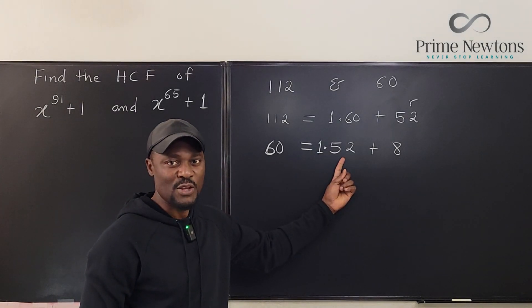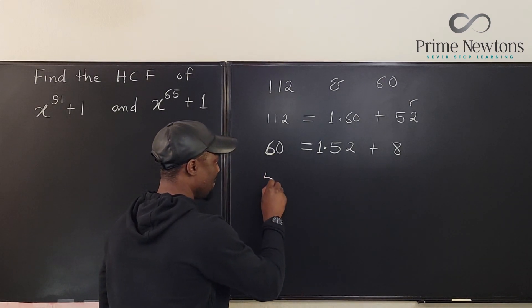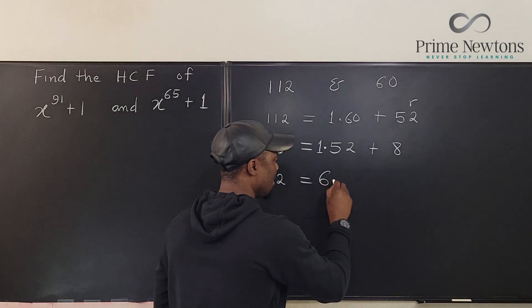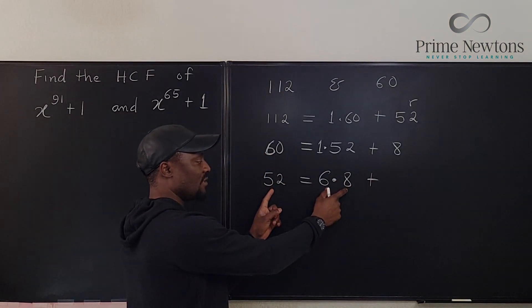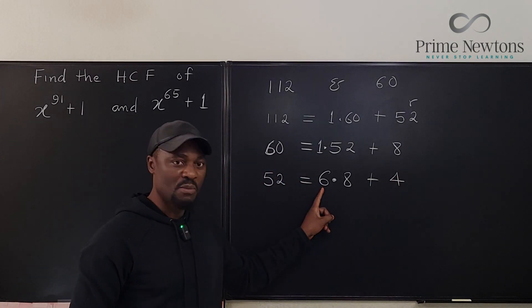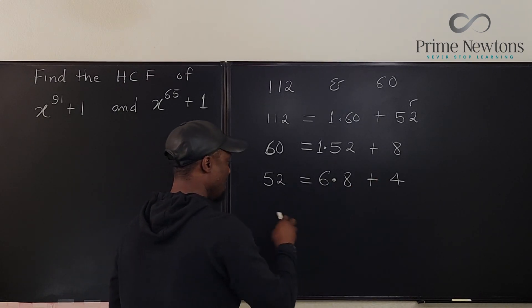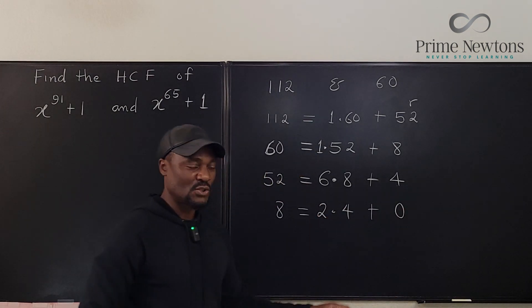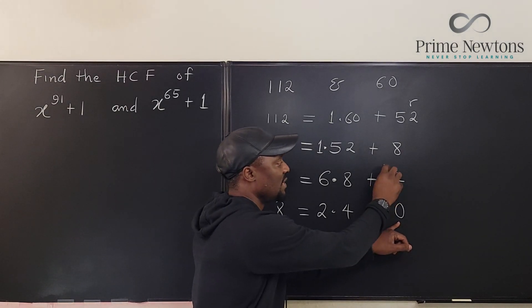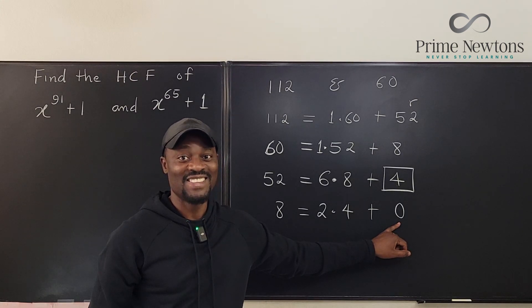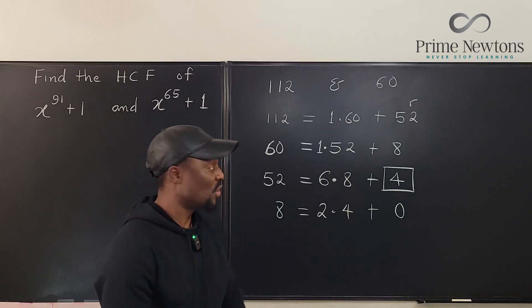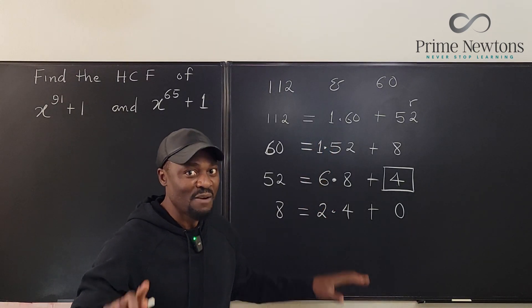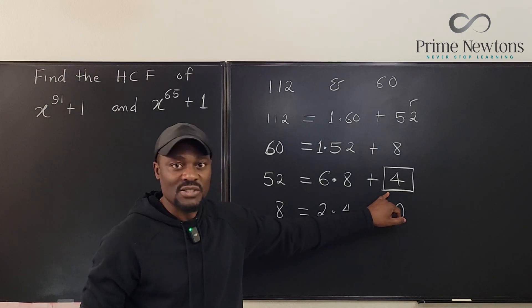Now ignore the number of times it divides — just pick the actual numbers. Write 52 in terms of 8: how many eights are in 52? That's 6, so 52 equals 6 times 8 plus 4. Now take 8 and write it in terms of 4: it's 2 times 4, remainder zero. As soon as you get a remainder of zero, the number above — the last non-zero remainder — is your highest common factor. That's the Euclidean algorithm.